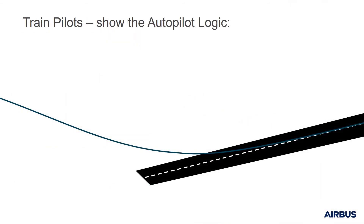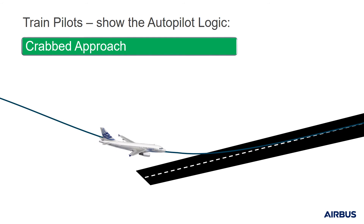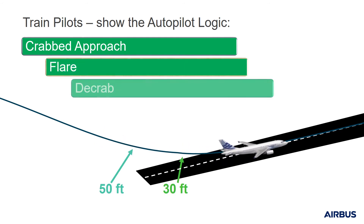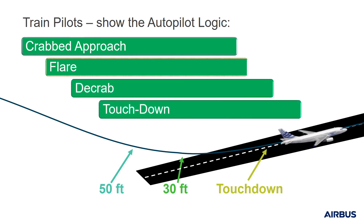Let's see how to train pilots for crosswind landings. You can do this by flying with the autopilot and explaining the autopilot logic. When the approach is flown by the autopilot, it will fly a crabbed approach. Around 50 feet, it will start the flare. Around 30 feet, it will de-crab. This ends with the rollout and touchdown. The phases are: flare, de-crab, and touchdown.